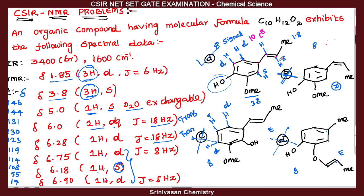This completes the proton NMR analysis. You can predict the NMR signals, understand the chemical shifts, and predict the values. Chemical shift is a compulsory part of proton NMR for CSIR exams — minimum one to four NMR questions are compulsory. NMR spectroscopy is very important for CSIR, so understanding chemical shifts is essential. Thank you very much.